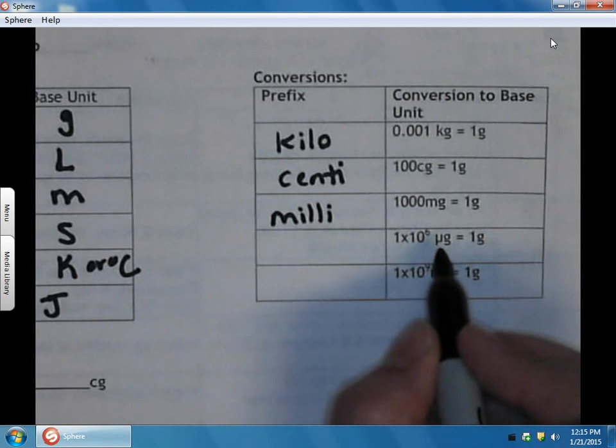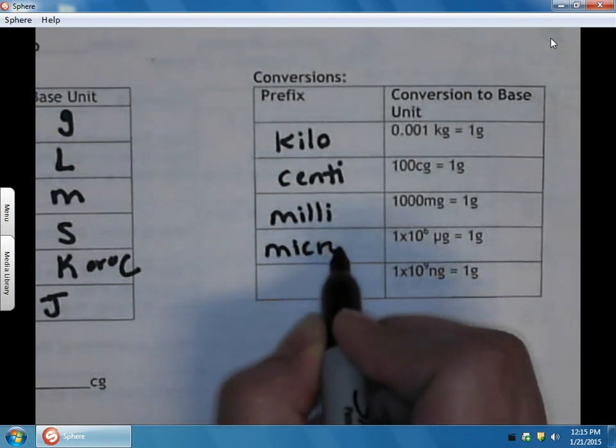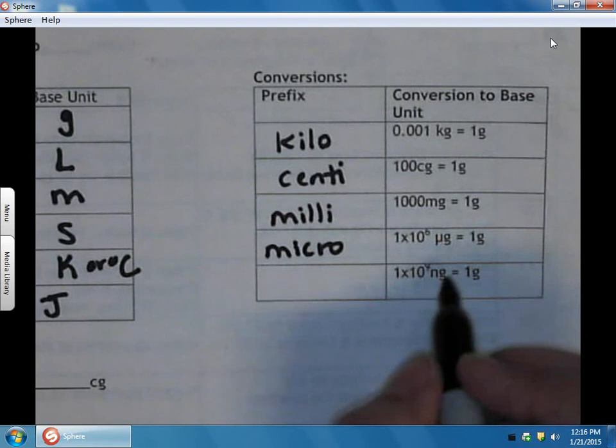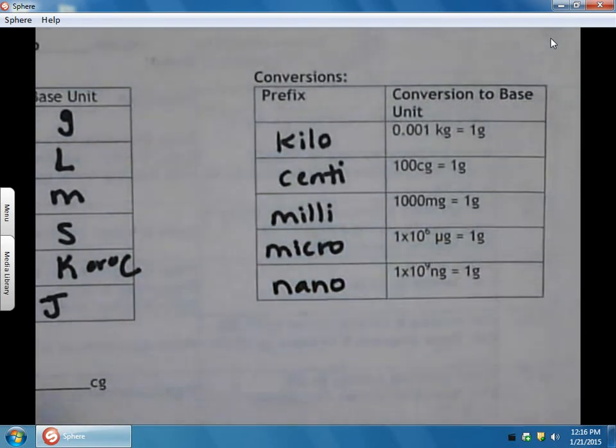This funky unit here is called the mu, and it stands for micro. It's 1×10^6, so there's 1×10^6 micrograms in every gram. And then the final one is nano, and that's 1×10^9.